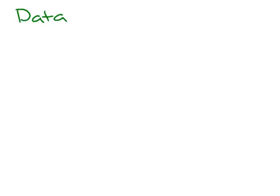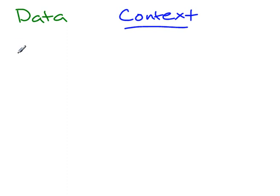Today we want to look a little more at data and what data are. One of the things when we're collecting data is we should always know what the context of the data that we are collecting is made up of. We have to know what the context is. In order to know what the context is, we want to ask about the W's.